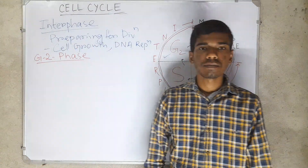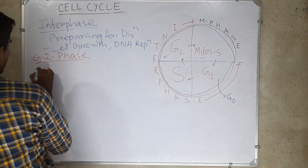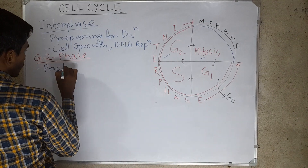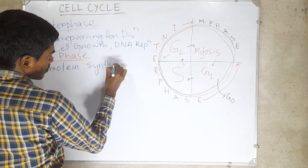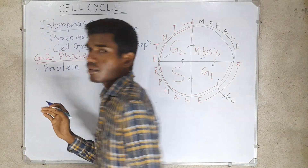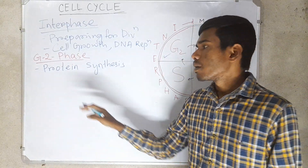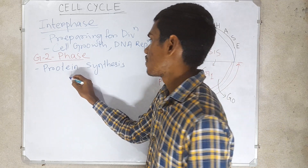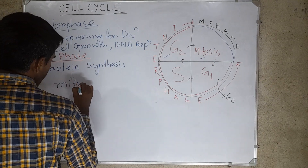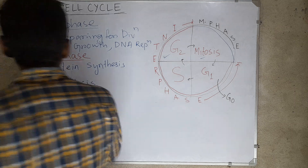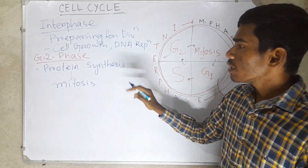In G2 phase, proteins are synthesized. Protein synthesis takes place, and thereafter mitosis — the actual division — takes place. During G2 phase, the cell growth also continues.